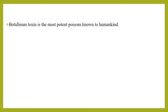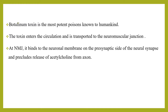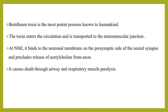Botulinum toxin is among the most potent poisons known to mankind. The toxin blocks neuromuscular transmission and causes death through airway and respiratory muscle paralysis. At least seven antigenic toxin types, designated by letters A through G, are distinguished serologically. Toxin types are further differentiated into subtypes by referencing the nucleotide sequence of their toxin genes.